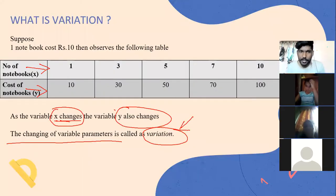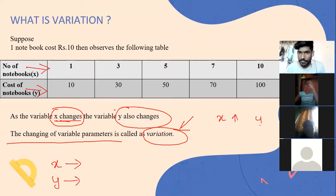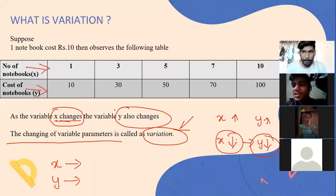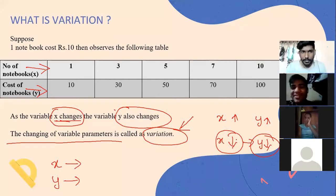In simple terms, variation means as the value of one variable changes, the value of another variable also changes. As x increases, y also increases; or as x decreases, y also decreases. Basically, change in one variable causing change in the other variable is nothing but variation. We have studied this in seventh standard as direct proportion and inverse proportion — it is the same thing.